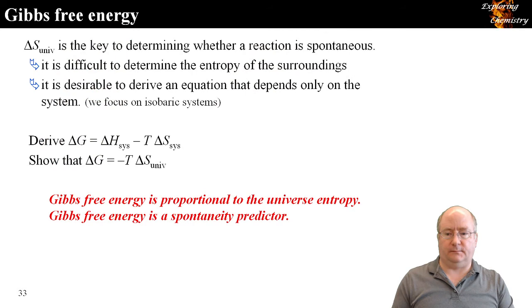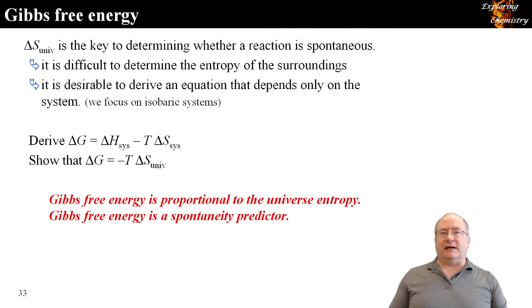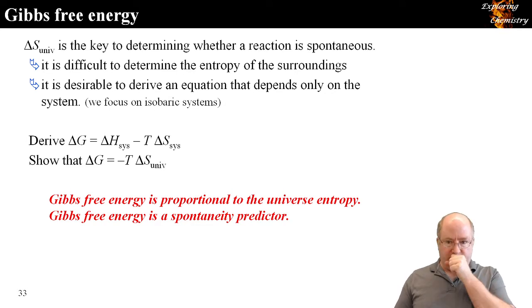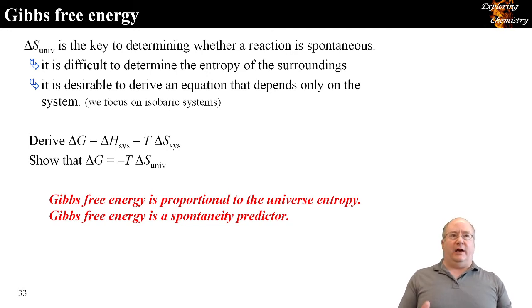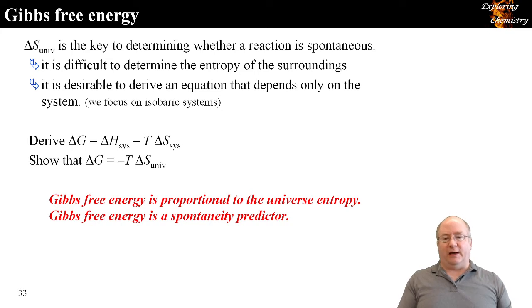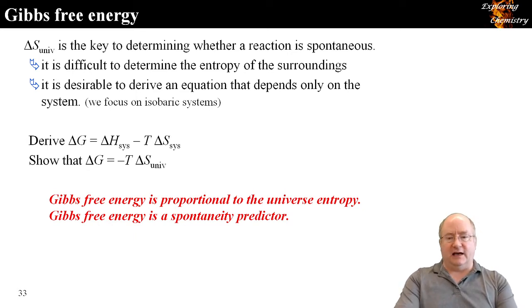We are going to get back into thermodynamics starting right now. The last time we looked at thermodynamics was over a week ago. We finished off on the next slide, but I want to start by revisiting what Gibbs free energy is. We didn't derive the equations — they were given to you — but conveying that Gibbs free energy is proportional to the entropy of the universe and is our spontaneity predictor. The equation for calculating ΔG is ΔH minus TΔS of the system.